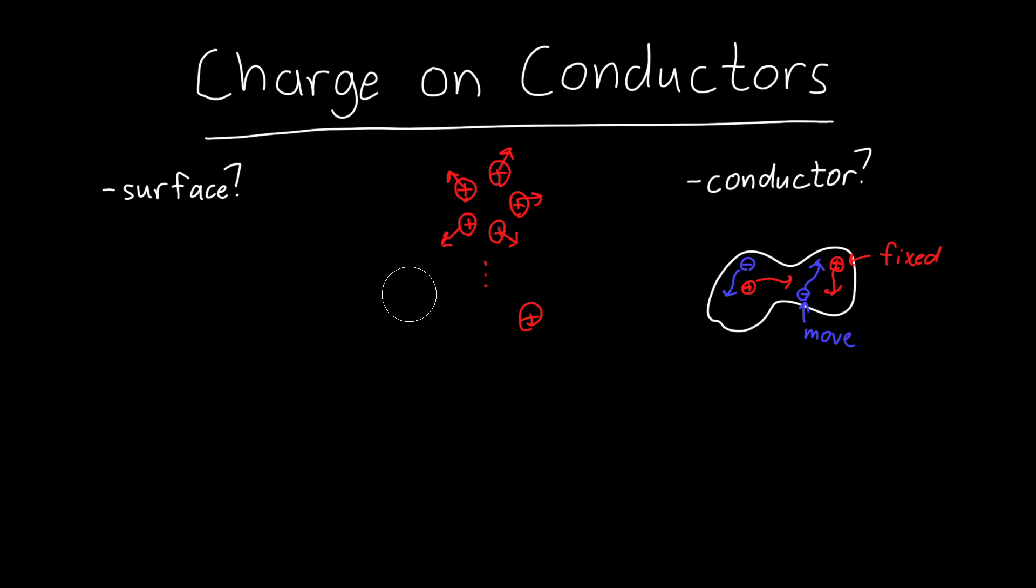So now what happens if we place two charged particles inside a conductor? So let's say this little blob is our conductor. And let's just place two positively charged particles inside that conductor. Well, what happens? Well, the same exact thing happens.